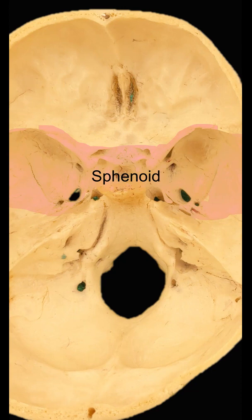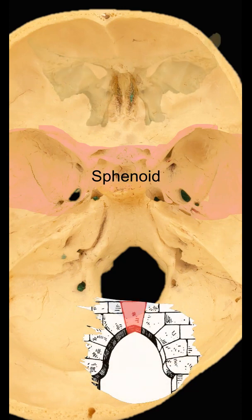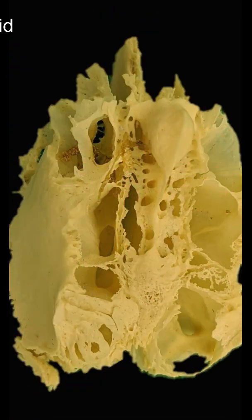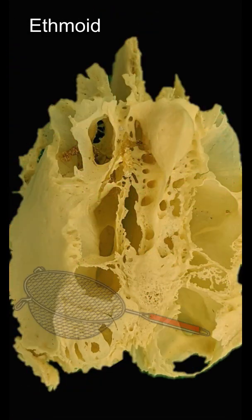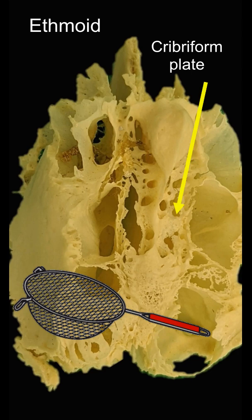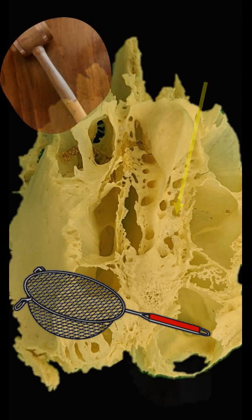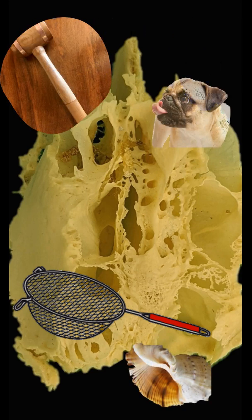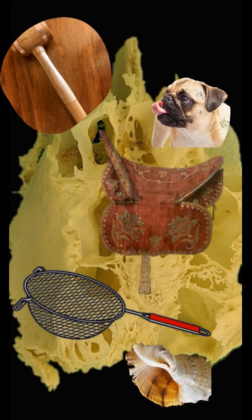The sphenoid bone itself means resembling a wedge, for being a complex bone situated as a wedge or keystone in the base of the skull. The ethmoid means like a strainer, perforated by many olfactory nerves that pass through its cribriform plate. Watch the other parts of this video for more similes in the skull, and mention other similes in the comments.